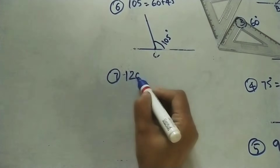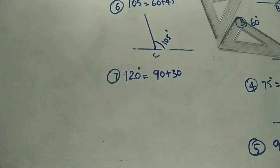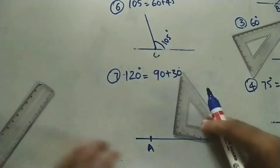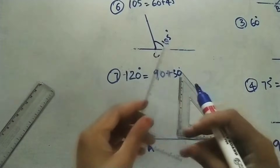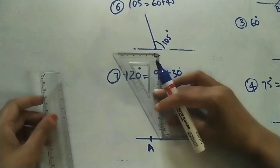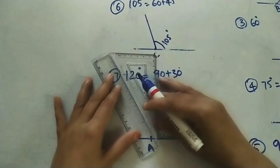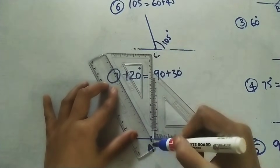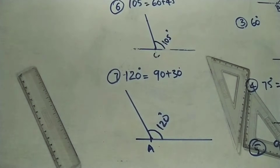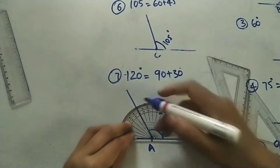Next is 120 degrees. 120 means 90 plus 30. Draw a horizontal line and mark at point A. This is 90 degrees and this is 30 degrees. Move the arrangement near A, keeping the scale coinciding with this side, and move so the scale passes through A. Remove it and draw the line — this angle is 120 degrees. Check: yes, this angle is 120.